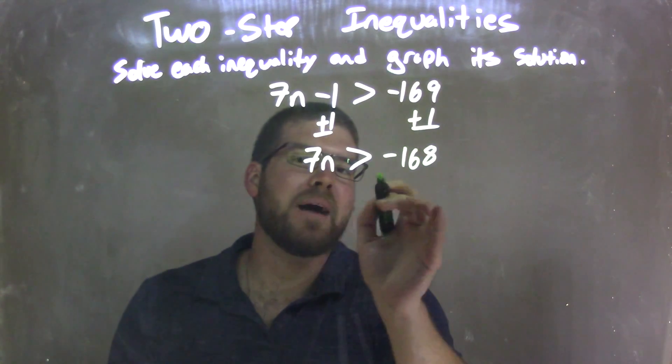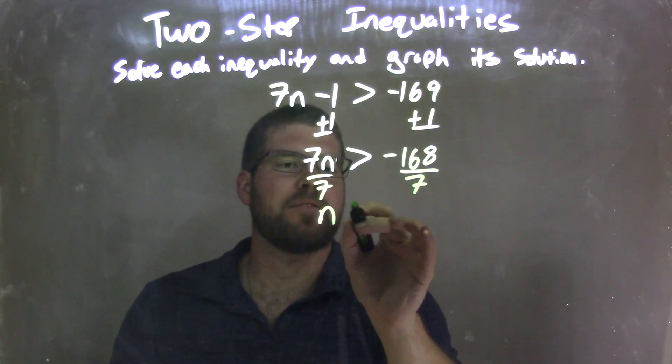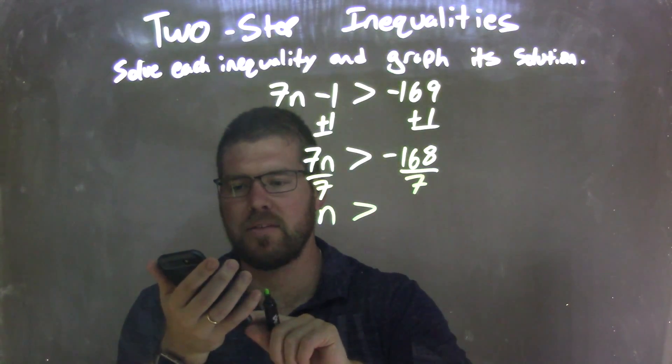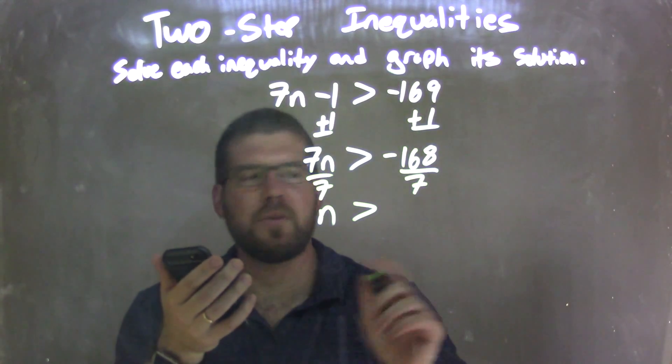Now, I need to divide by 7 on both sides to get n by itself. I have n by itself on the left is greater than, and I'm going to use my calculator here, 7 into 168. So 168 divided by 7 comes out to be 24.